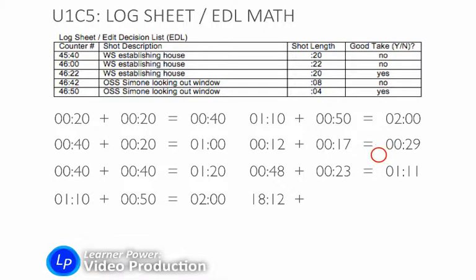And one more time. 18 minutes 12 seconds plus 23 minutes 52 seconds is equal to 42 minutes and 4 seconds. You've got to work in a base 60 system in order to add up these numbers in video production.